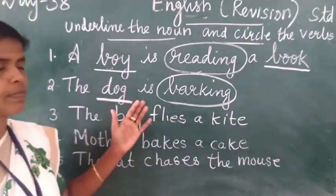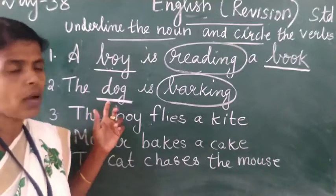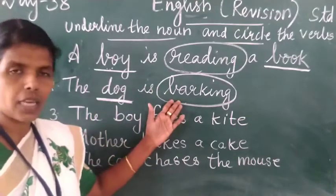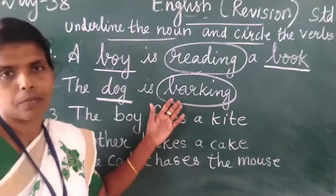Students, in 'The dog is barking': dog is the noun, and barking is the action word — that is the verb.